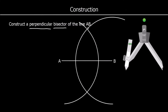We've got two intersections — two points exactly the same distance away from A and B. If we join them up, we have drawn a perpendicular bisector. It's exactly in the middle and it crosses at 90 degrees. This is also the locus of the points equidistant from A and B, so every point along this line is an equal distance away from A and B.